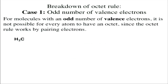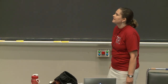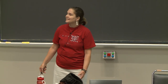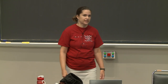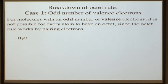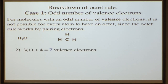For molecules with an odd number of valence electrons, it's not possible for every atom to have a complete octet. That involves pairing — that involves even numbers of electrons. So let's look at an example: our methyl group, CH3. Hydrogen brings one valence electron and there are three hydrogens; carbon brings four valence electrons. So in sum, we have seven — an odd number of electrons.